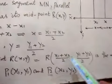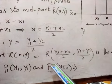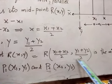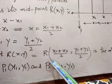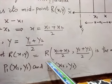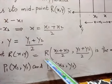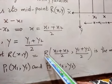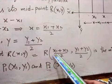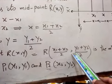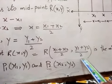Now, students, we will apply the midpoint formula in our exercise 9.3. This is the midpoint formula: R is the midpoint, found by using x1 plus x2 by 2, comma, y1 plus y2 by 2.